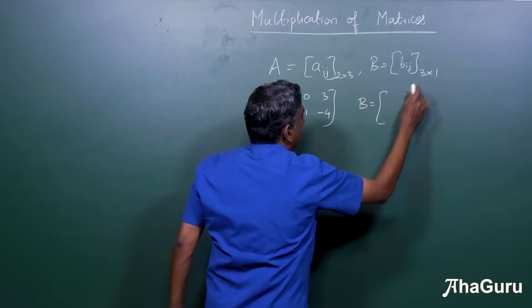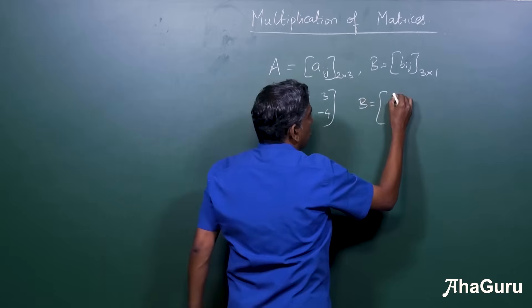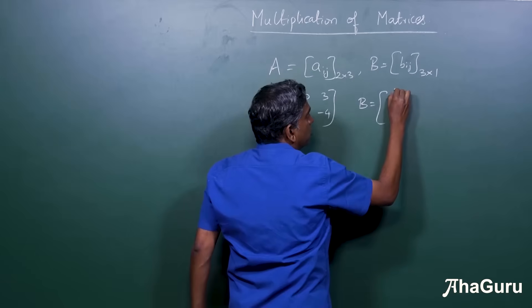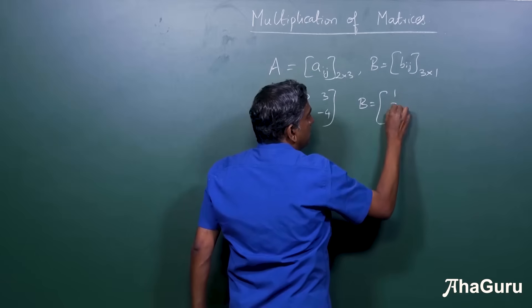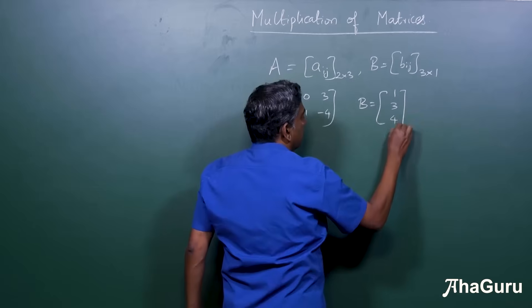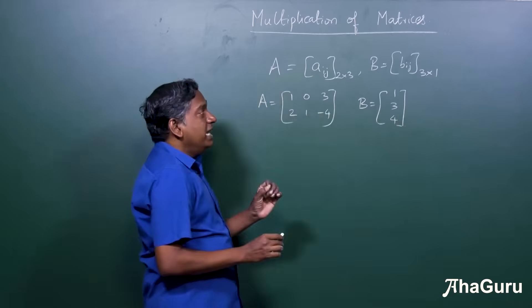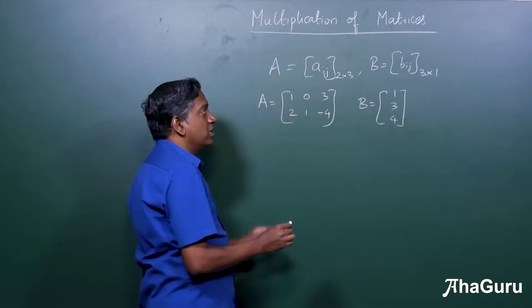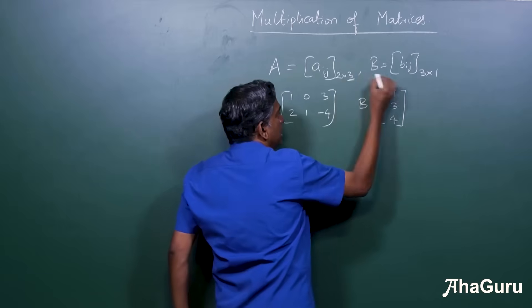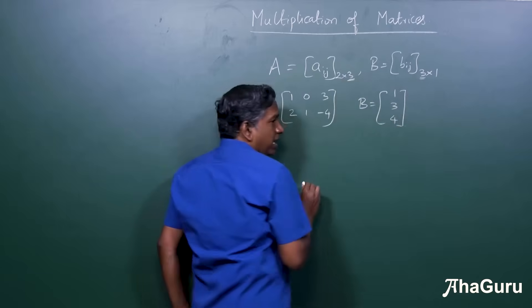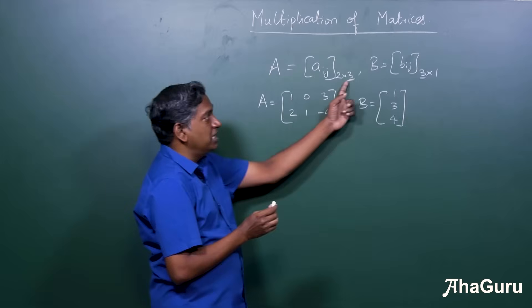And B is a 3 by 1, right? Three rows, 1 column, right? So 1, 3, and 4. Now, it is important to note that this 3 and this 3 are equal. And that's not by coincidence, I specifically chose that.